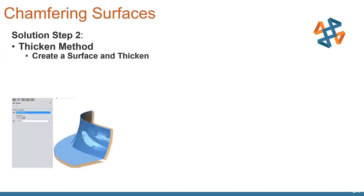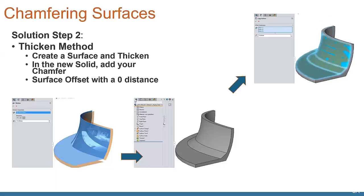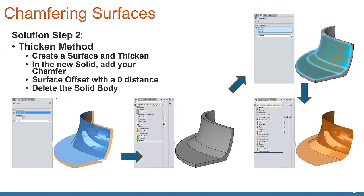Option two is the thicken method. We create a surface and we thicken that surface, whatever value that we need to there. In your new solid, we add a chamfer in there. So you can see we add that chamfer to the inside corner. We then create a surface offset with a distance of zero. That's possible, that's a thing that you can do there. You can put in an actual value of zero at that point.